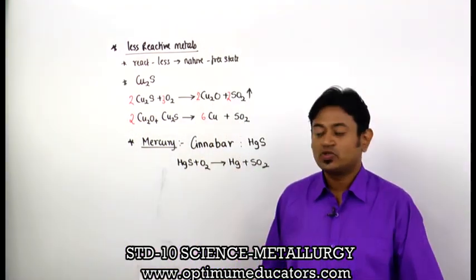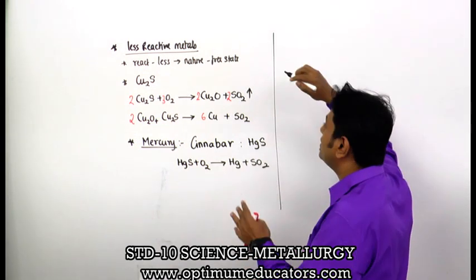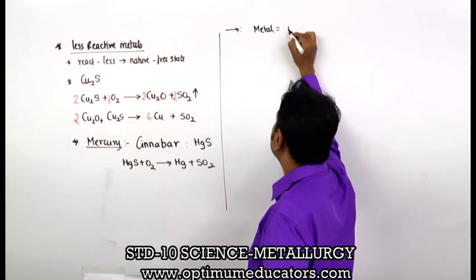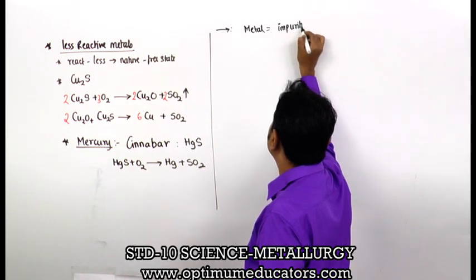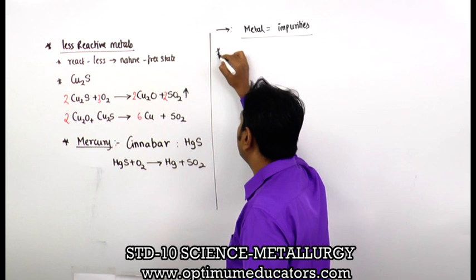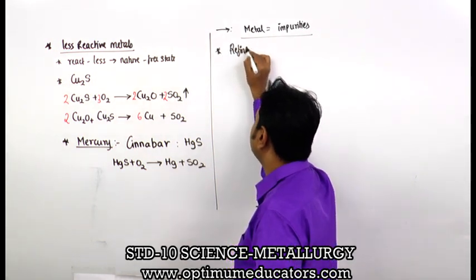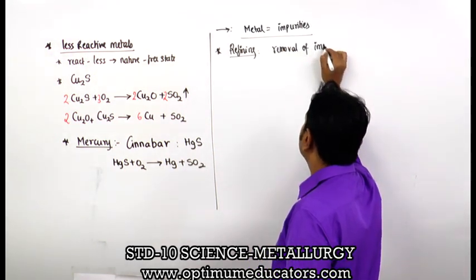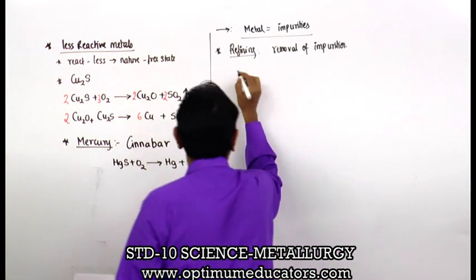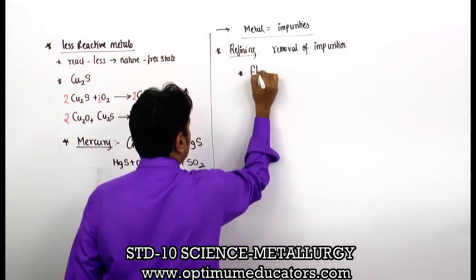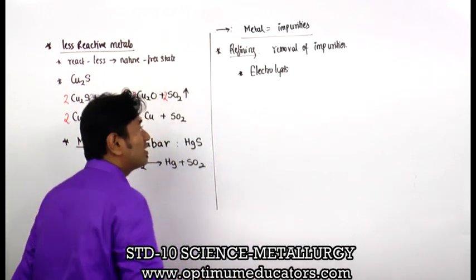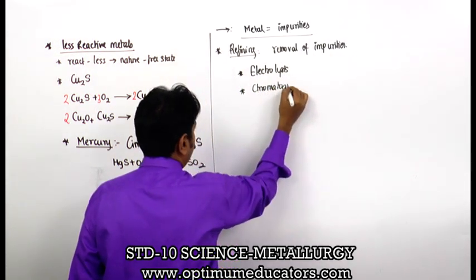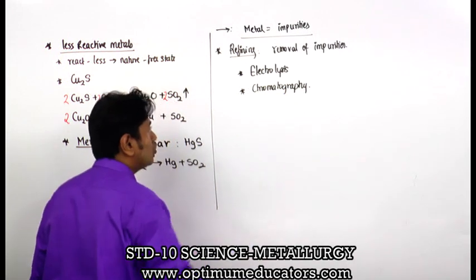After extraction, the metal often has lots of impurities. The removal of impurities is the next step, known as refining. Some basic methods available are electrolysis, chromatography, and poling. These processes properly remove impurities and give a concentrated pure metal. With this, the major chunk of metallurgy is done.